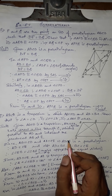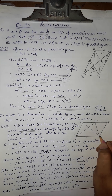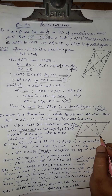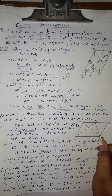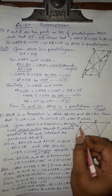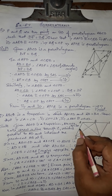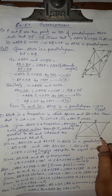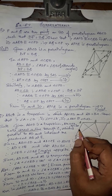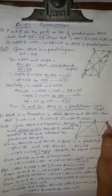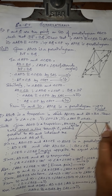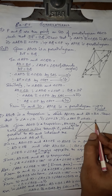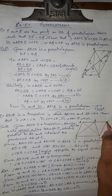For this proof we need a construction. Through point C, we draw a line parallel to AD. This line CE is parallel to AD and intersects the line produced from AB at a point E. So AD and CE are parallel by construction.